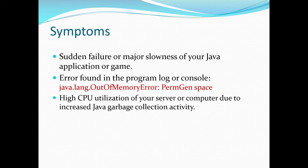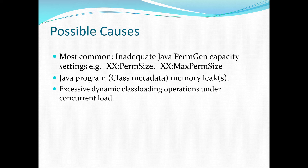At some point, you'll have to kill the Java process or it will terminate by itself. The most common cause you will see is simply inadequate Java PermGen capacity settings. If you're using the default setting, it's fairly low — below 100 megabytes depending on whether you're using 64-bit or 32-bit. It's always recommended to fine-tune the PermGen capacity, especially if you're using an enterprise-type Java application.